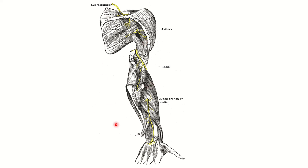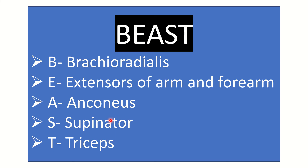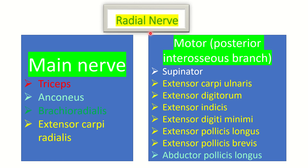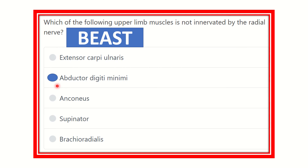We can use a mnemonic to remember the muscles supplied by the radial nerve. The mnemonic is BEAST: B for brachioradialis, E for all extensors of the arm and forearm, A for anconeus and abductor pollicis longus, S for supinator, and T for triceps. Through this mnemonic it is very easy to know all the muscles supplied by the radial nerve.